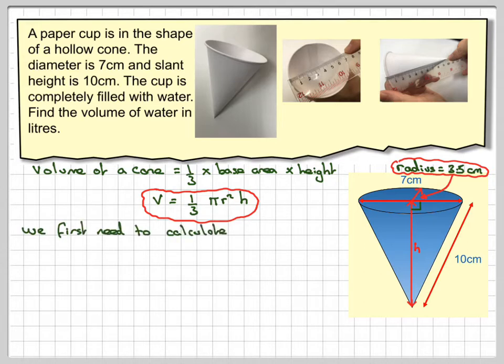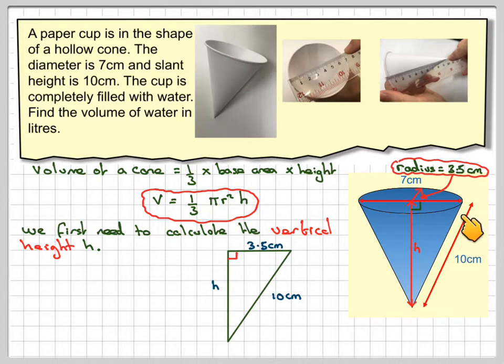So we first need to calculate the vertical height, i.e. the one which is 90 degrees to the radius. If we draw out a right-angled triangle, which is what we get here, we can find h by using a little bit of Pythagoras.